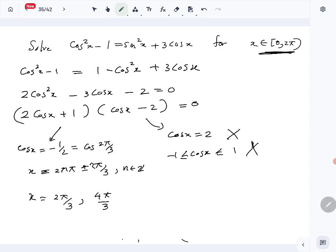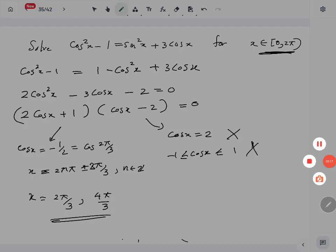Sorry, this should be 2π/3. That is the general solution, so our solution is 2π/3 or 4π/3 in the correct region. That is part A of the question.